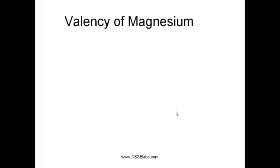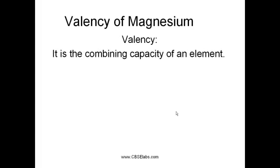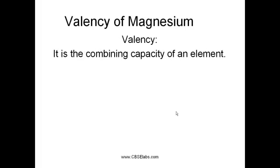Now we will discuss how to find out the valency of magnesium. First of all, let us look at the definition of valency. It is actually the combining capacity of an element. The combining capacity, that is valency, is generally determined with the help of the number of valence electrons present in the outermost shell.